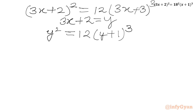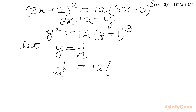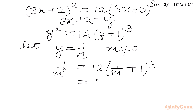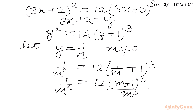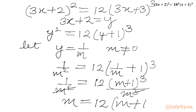Now I will follow the conventional step. Let us consider y = 1/m. So our equation will become 1/m² = 12 times (1/m + 1)³. Here m cannot be 0, since the denominator cannot be 0. Now we will take LCM in the RHS. We will get (m + 1)³ over m³. The LHS is 1/m². Since m cannot be 0, we cancel, and after cross multiplying we get m = 12(m + 1)³.